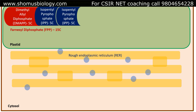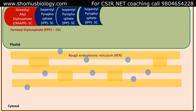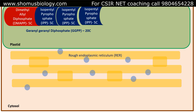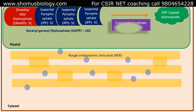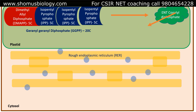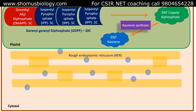They become the 15-carbon compound farnesyl diphosphate (FPP). Then another IPP associates with FPP to form the 20-carbon compound geranylgeranyl diphosphate (GGPP). This GGPP is further converted into ENT-copalyl diphosphate by the enzyme copalyl diphosphate synthase (CPP), found inside the plastid. ENT-copalyl diphosphate is then converted into ENT-kaurene by the enzyme kaurene synthase, also found in the plastids.